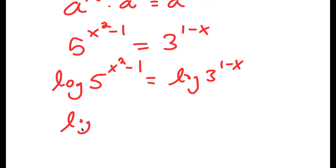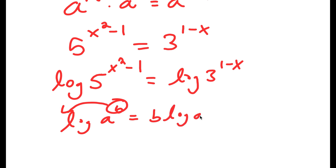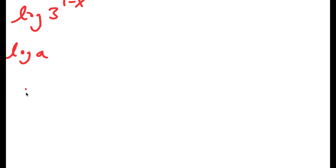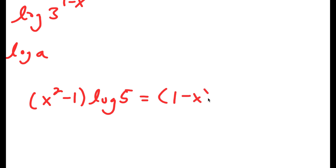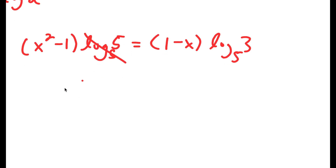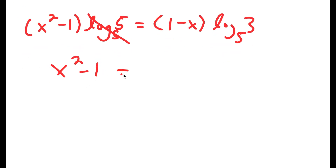If I have something in the form log a to the power of b, I can move b to the front, so it equals b times log a. In this case, I get x squared minus 1 times log 5 is equal to 1 minus x times log 3. Now I'm going to divide both sides by log 5, so those cancel to get 1. Now I have x squared minus 1 is equal to 1 minus x times log base 5 of 3.